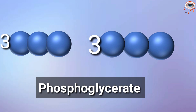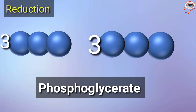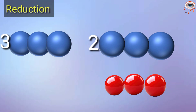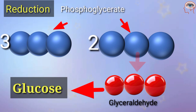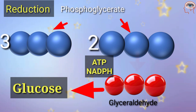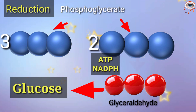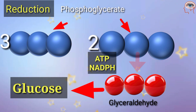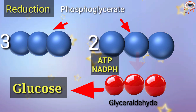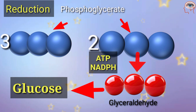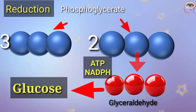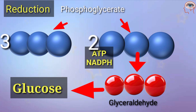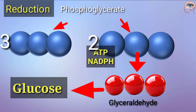In the second step, which is called reduction, the phosphoglycerate is converted into glucose. This step gets energy from ATP and NADPH. During this, phosphoglycerate is converted into glyceraldehyde-3-phosphate. This step involves the transfer of electrons, that's why it is called reduction.